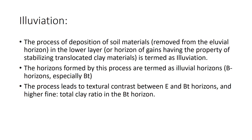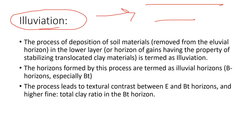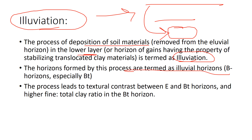The next process is illuviation, which is a continuation of eluviation. In eluviation, substances are transported from upper to lower layers; in illuviation, those transported materials are deposited and fixed in the lower layer. This is the deposition of soil materials in the lower layer, leading to the formation of a separate horizon called the illuvial horizon.